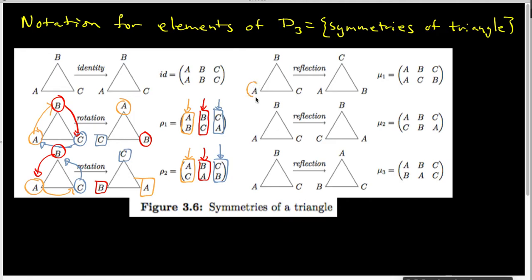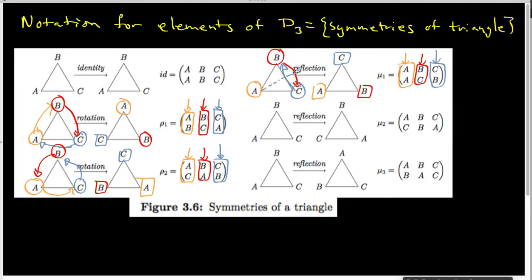For the first of the three reflections: A starts here and lands here, so basically A didn't get moved, and that's what this particular column indicates — A stayed put. B starts here and lands there, so B went to C — that's what this column indicates. And finally C starts here and lands there, so C went back to B, and that's what this column indicates. The reason this is called a reflection is that we are reflecting across that particular line of symmetry.